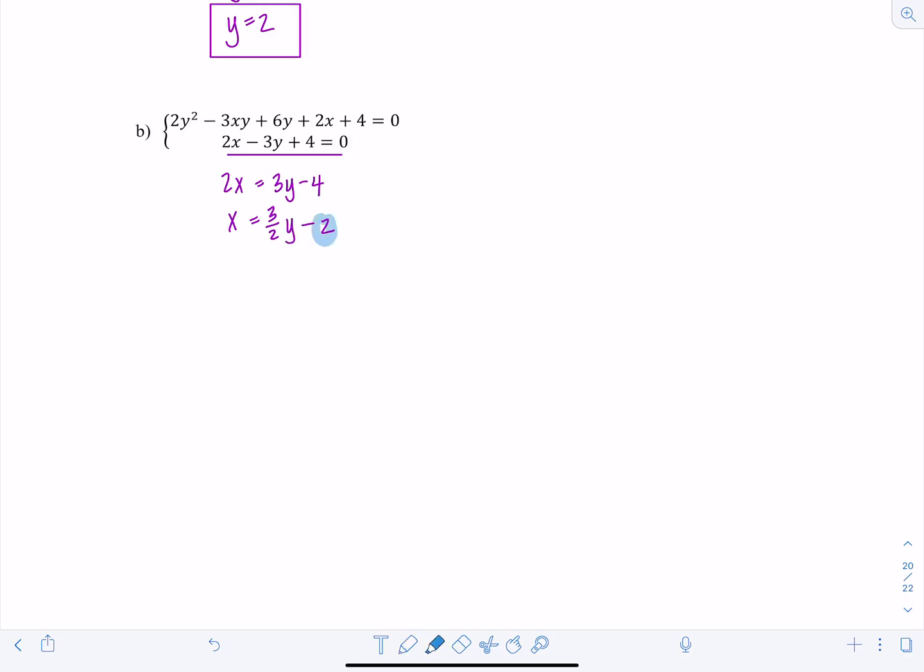Now I'm going to substitute this in for x into the first equation. So now I'm going to have 2y squared minus 3 times 3 halves y minus 2 times y plus 6y plus 2 times 3 halves y minus 2 plus 4 is 0.